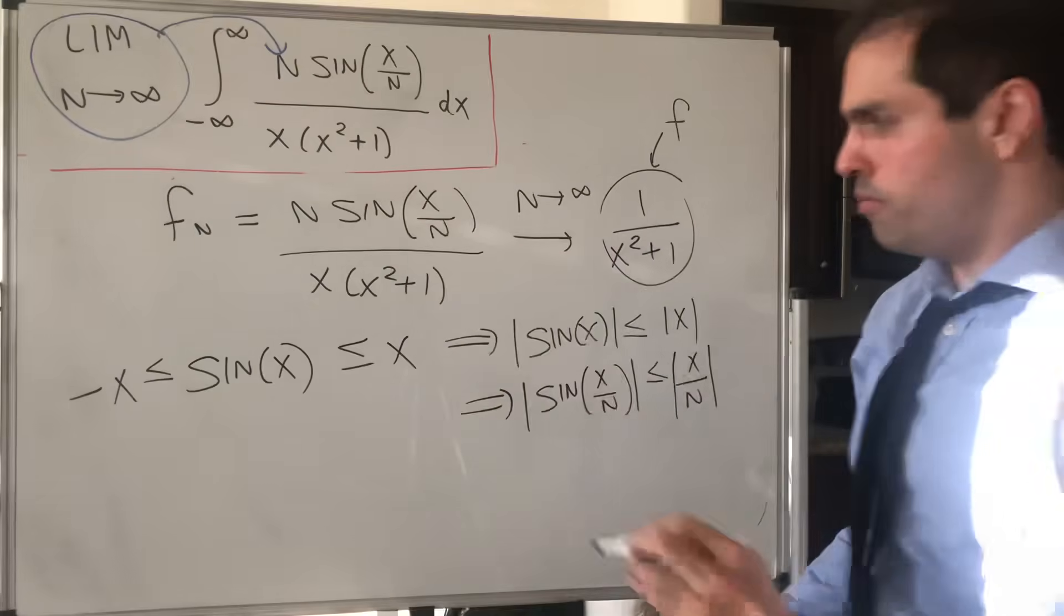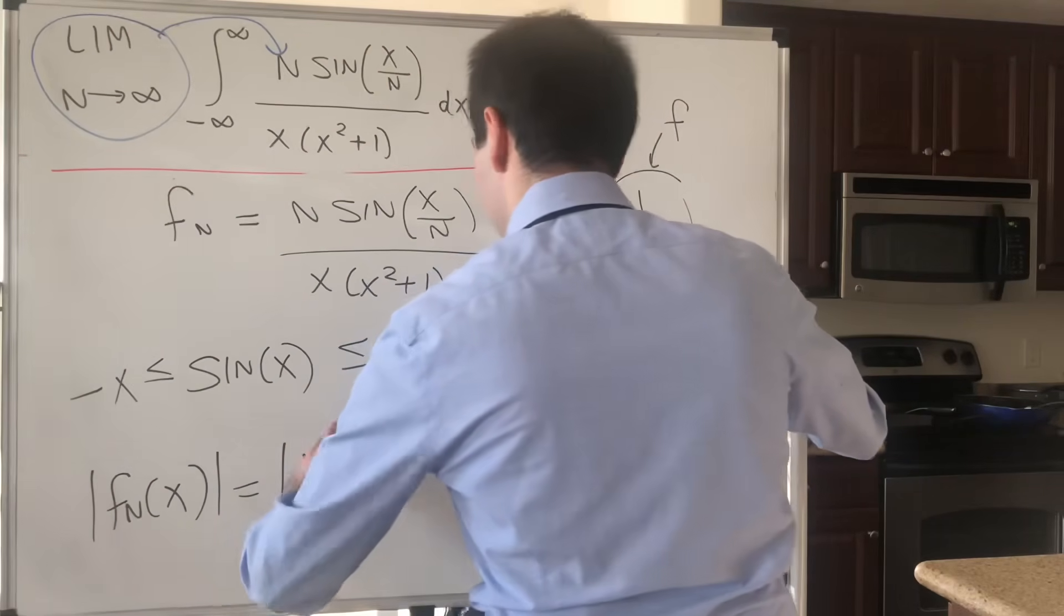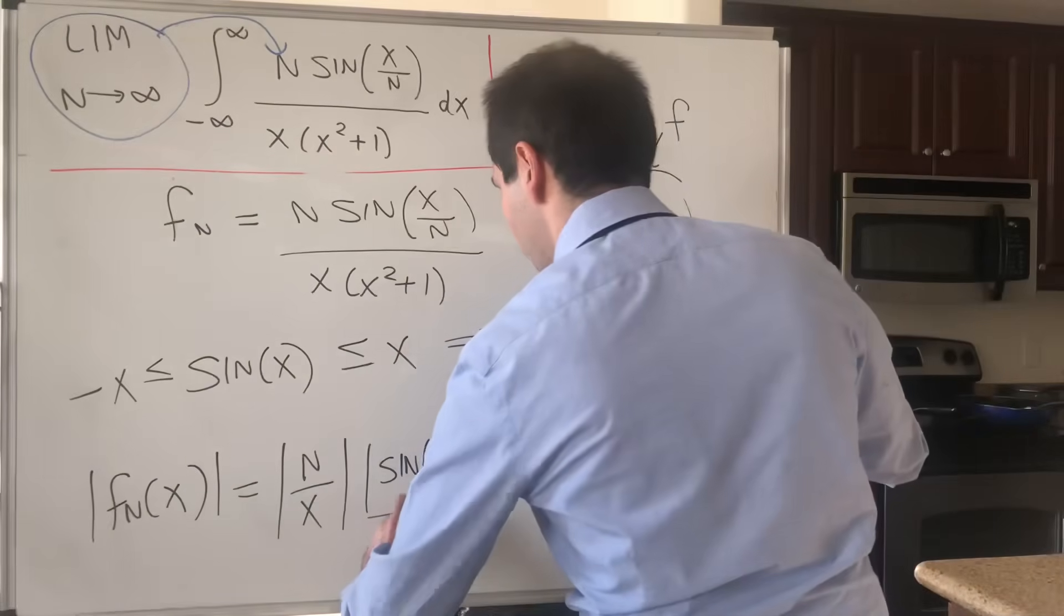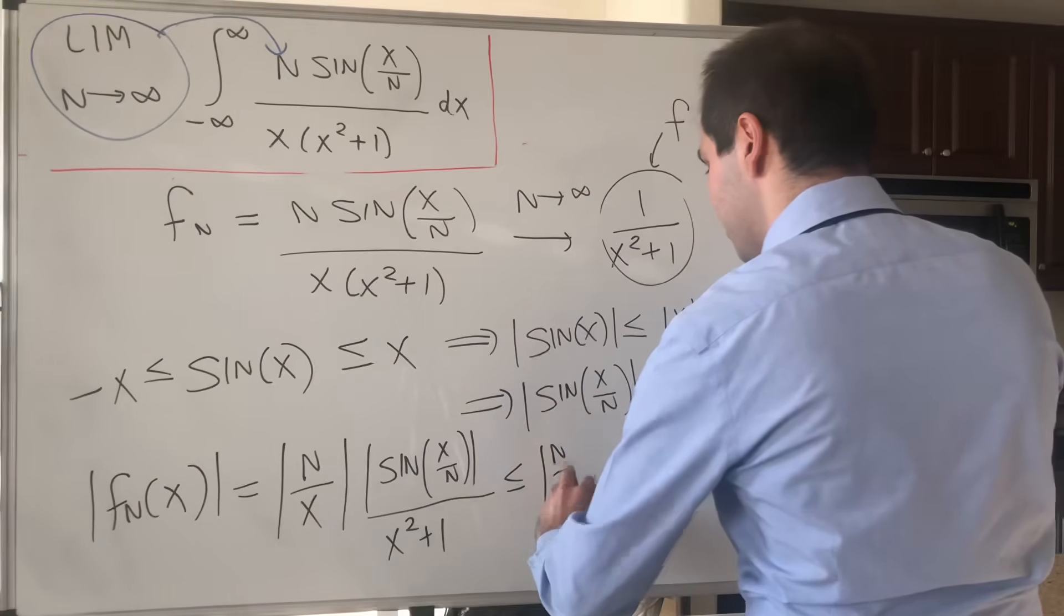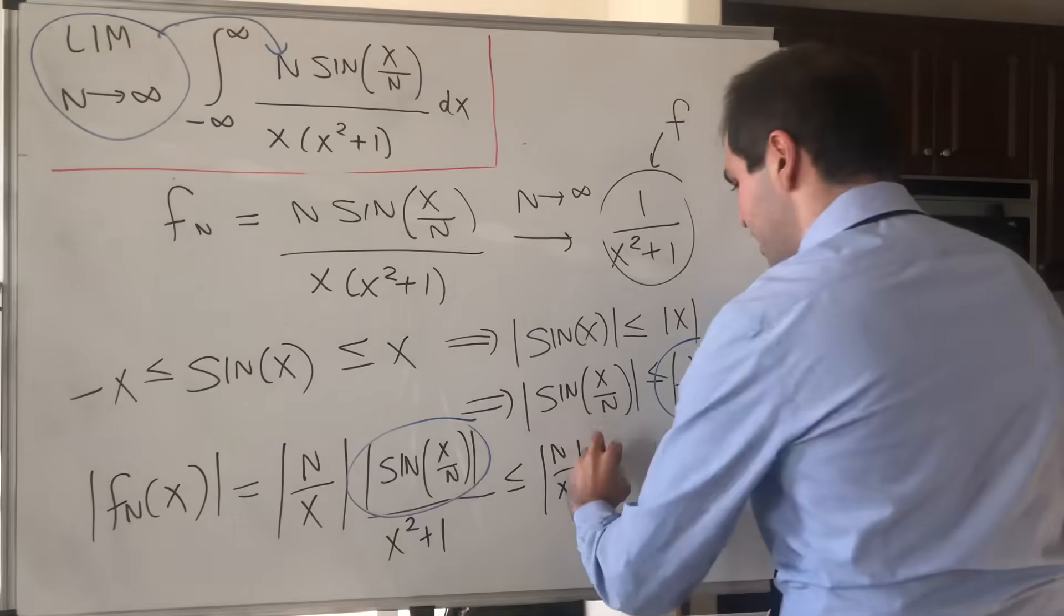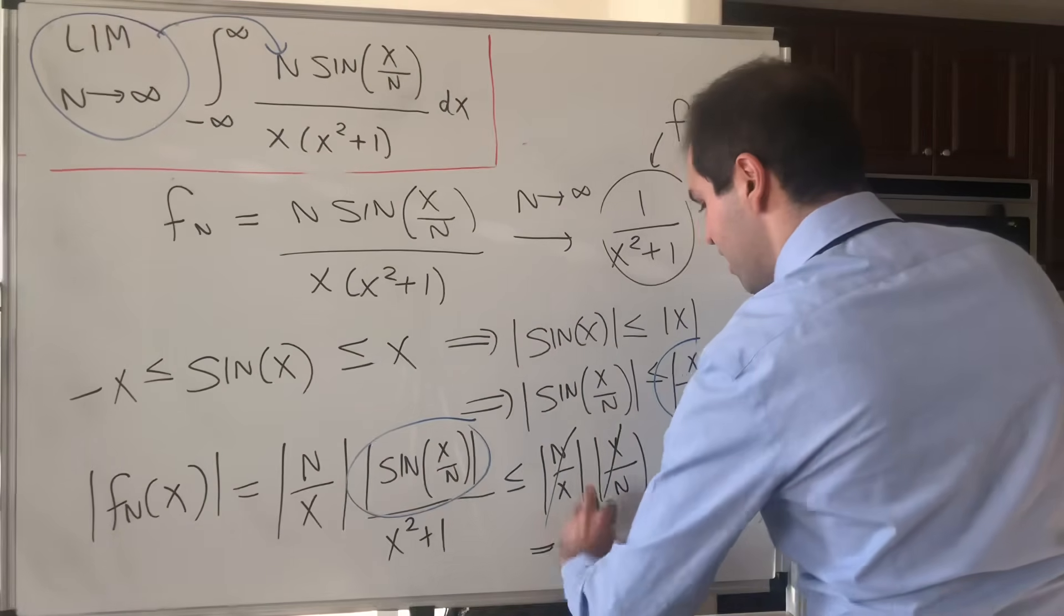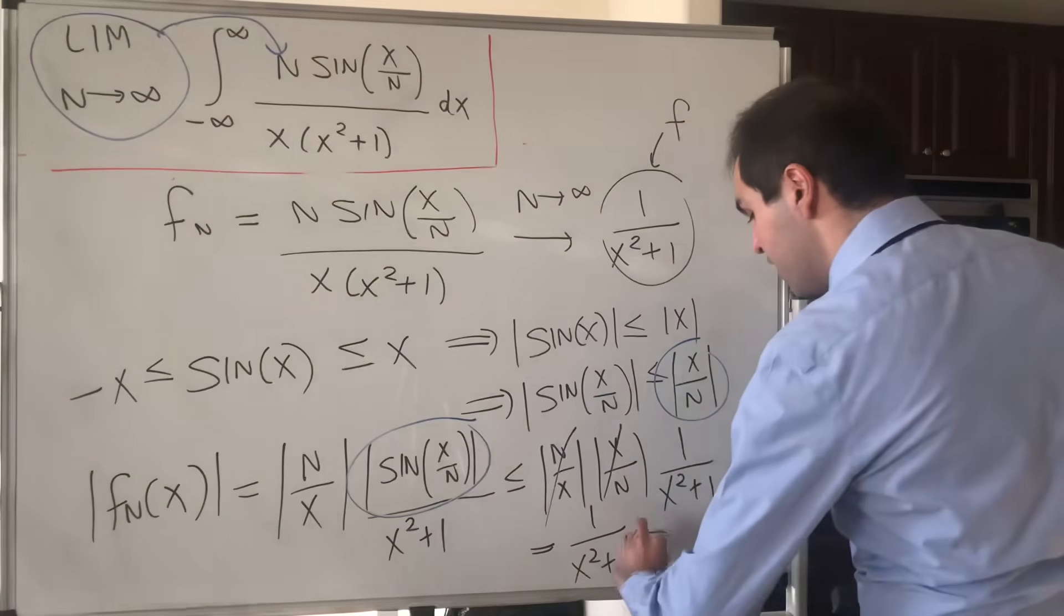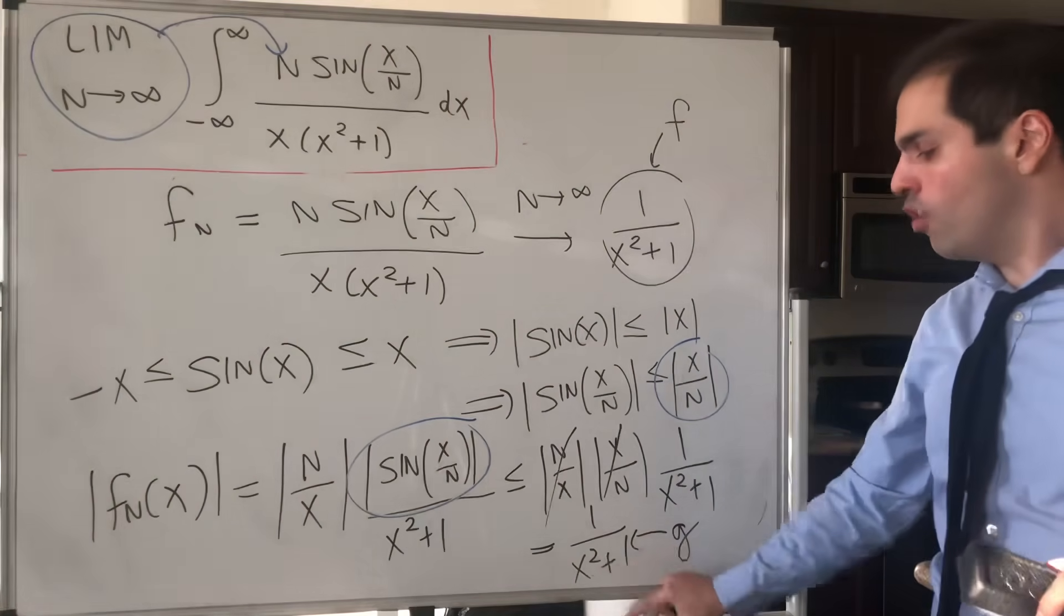And now, so what does that become? So now let's calculate fn of x. That becomes absolute value of n over x times absolute value of sine of x over n over absolute value of x squared plus 1, which is just x squared plus 1. But using this identity, we get this is less than or equal to n over x. And then, sine of x over n is less than or equal to x over n in absolute value. And 1 over x squared plus 1. This magically cancels out, and you get 1 over x squared plus 1.